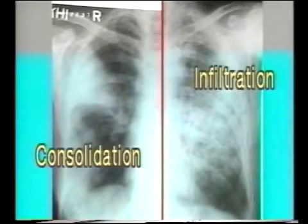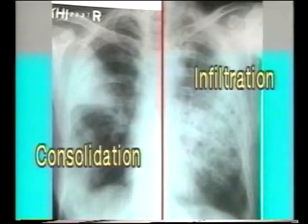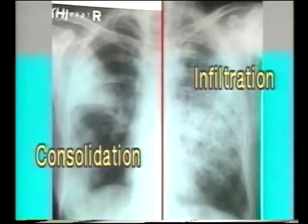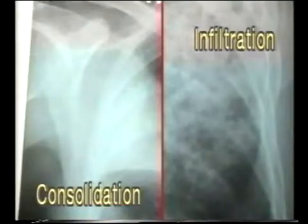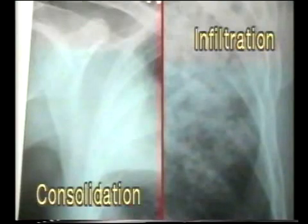Let us compare and note the difference between consolidation and infiltration. On the left is a patch of consolidation which shows a uniform white opacity limited to a single lung segment, while on the right is the typical infiltration showing a cotton-wool-like, fluffy nature not restricted to any particular segment. In a close-up view, note the uniform white opacity of consolidation and the irregular patchy opacity of infiltration. That is the difference between consolidation and infiltration.